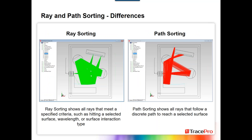Here's a graphical difference between the two. Ray sorting on the left shows all rays that meet a specified criteria, such as hitting a selected surface, rays of a specific wavelength, or certain interaction type. In this case we're looking at rays hitting a specific surface and of a certain wavelength. Path sorting shows all the rays that follow a discrete path to reach a selected surface — all rays shown here are following the same path to get to the detector.